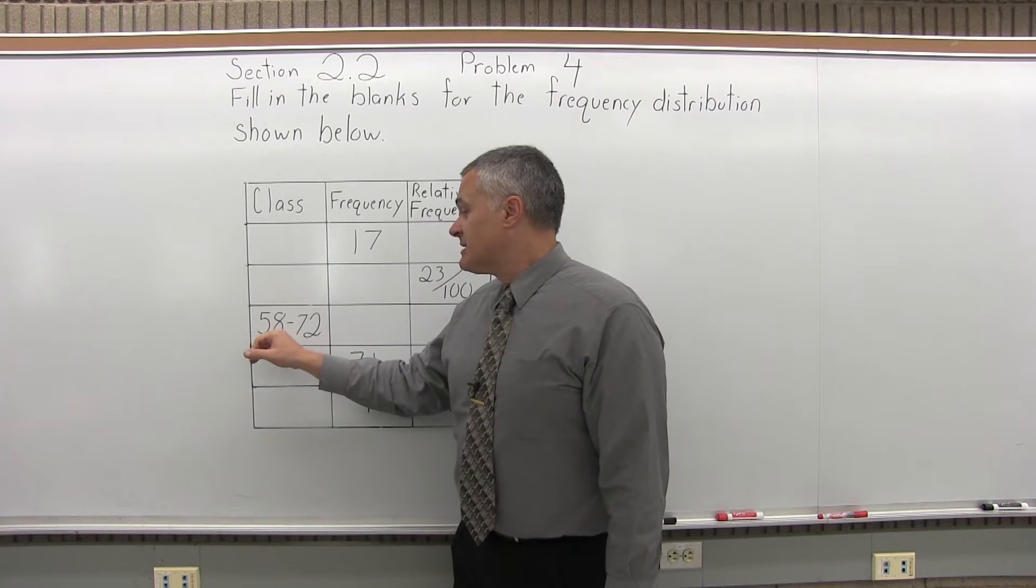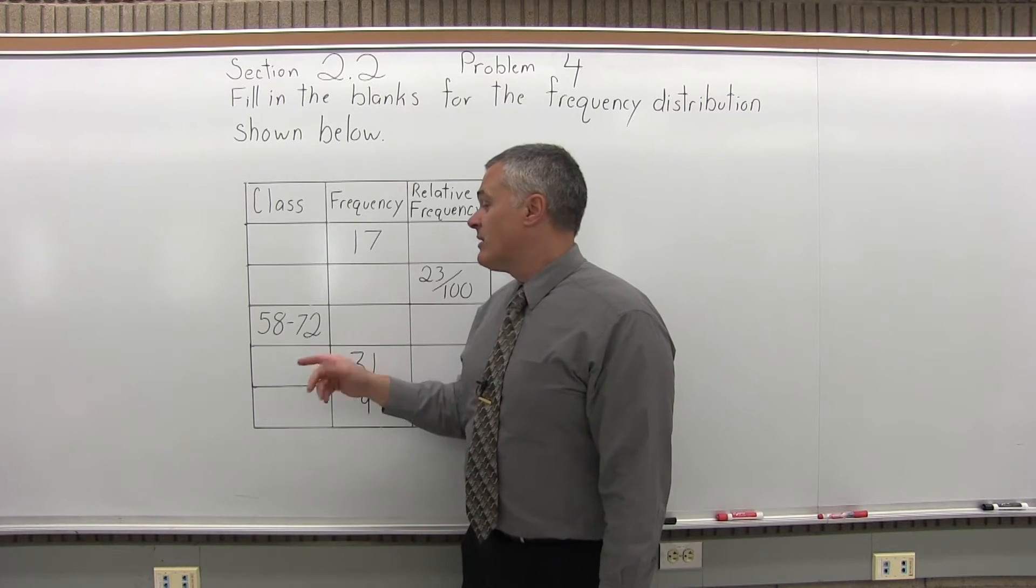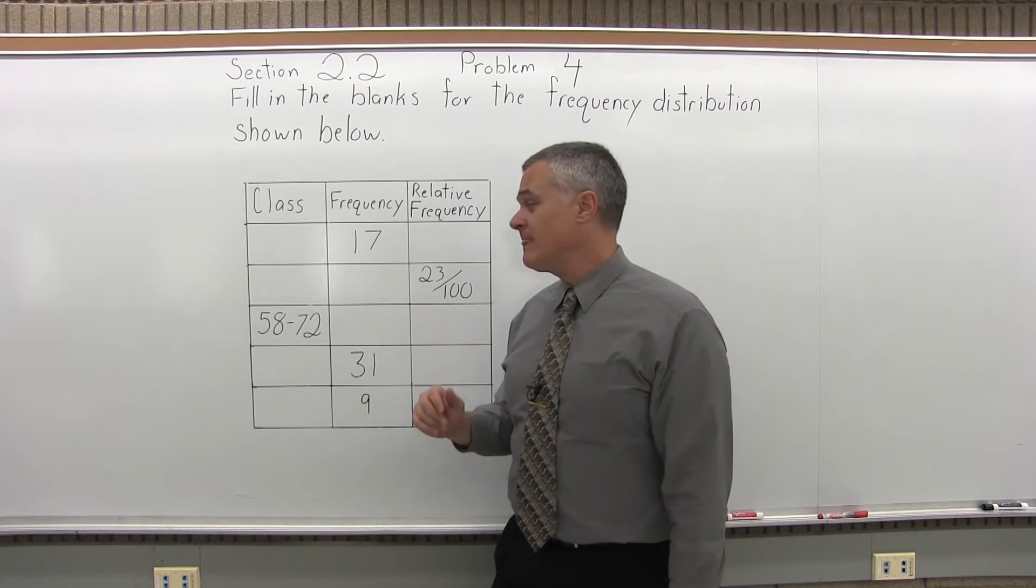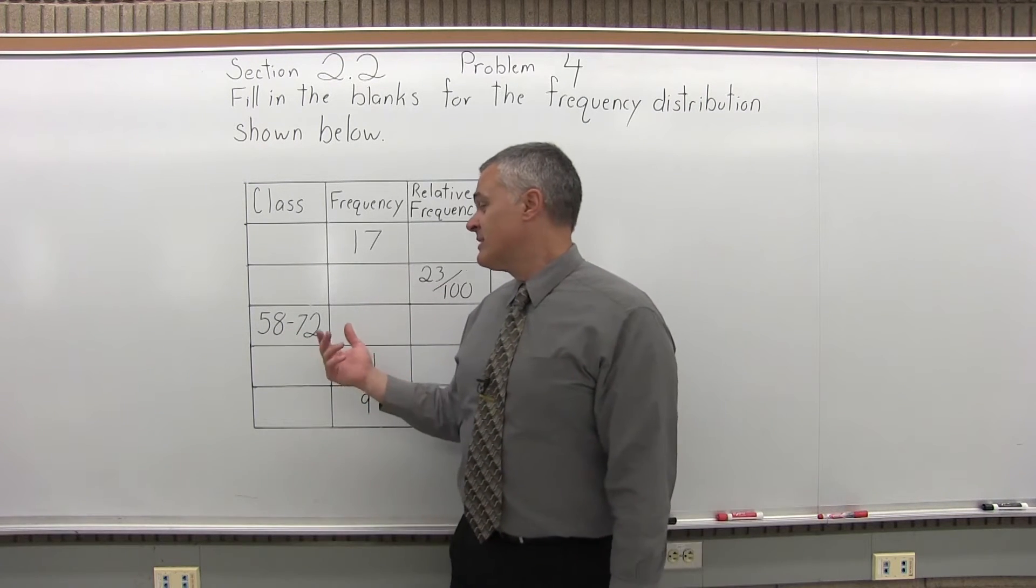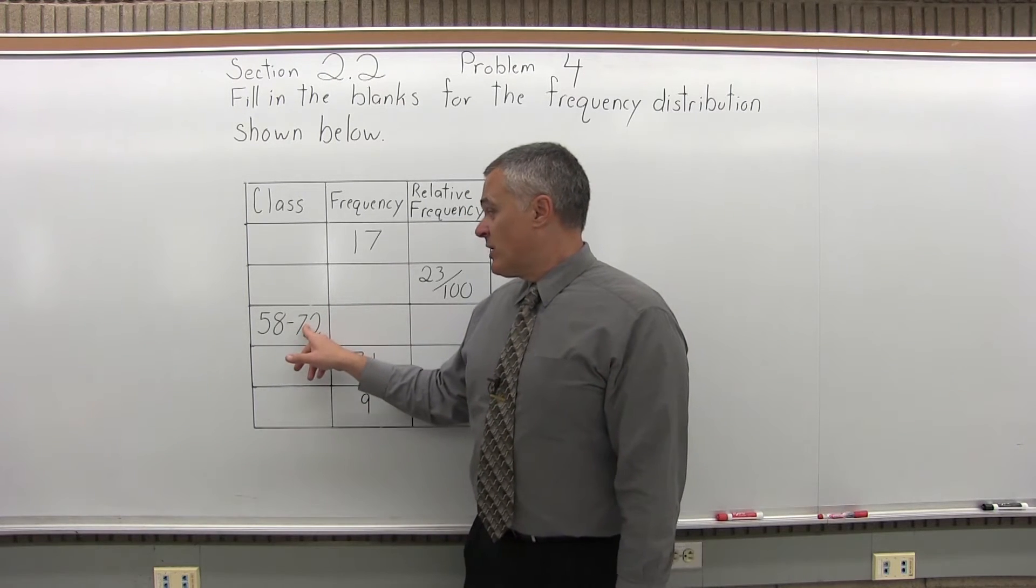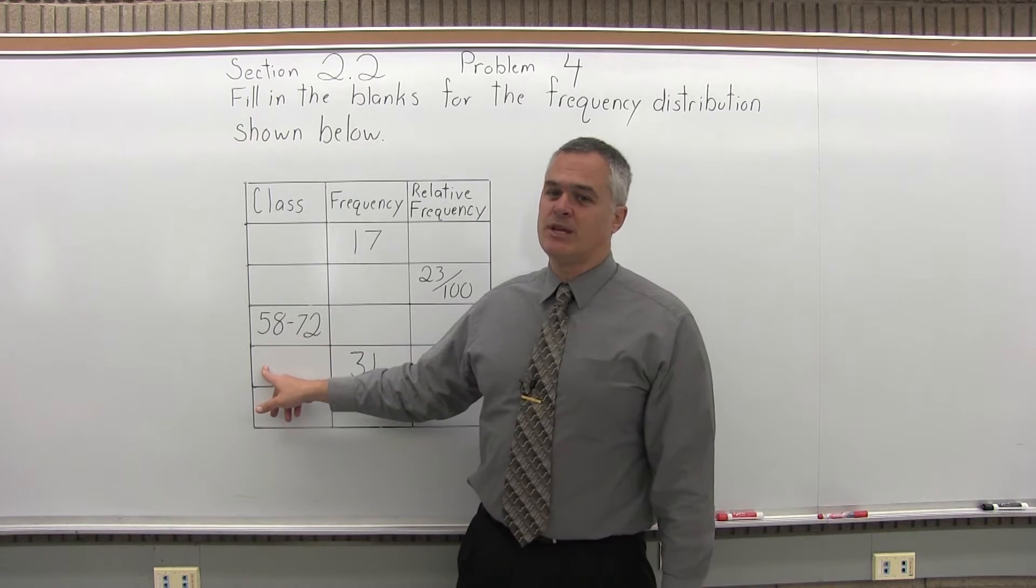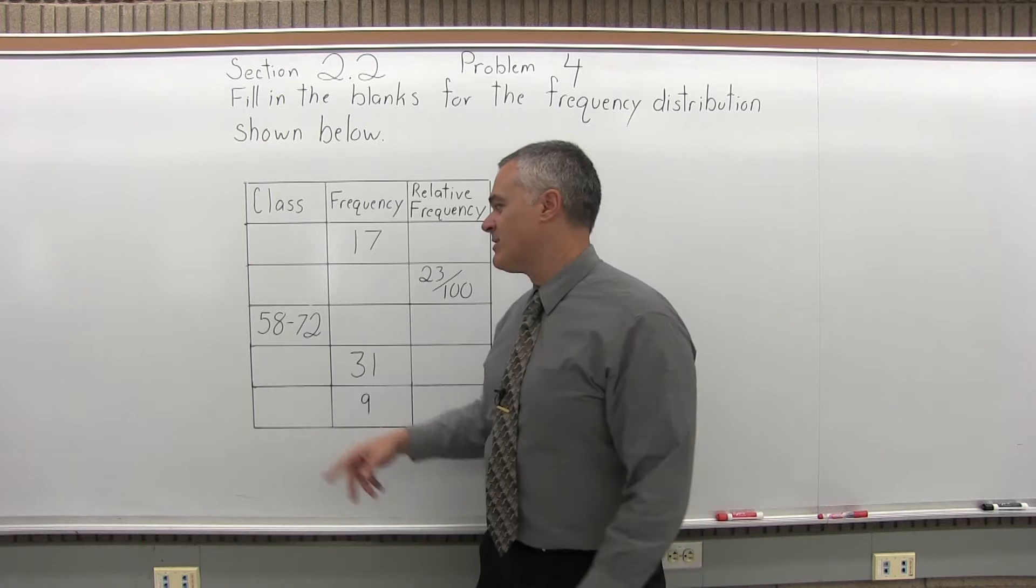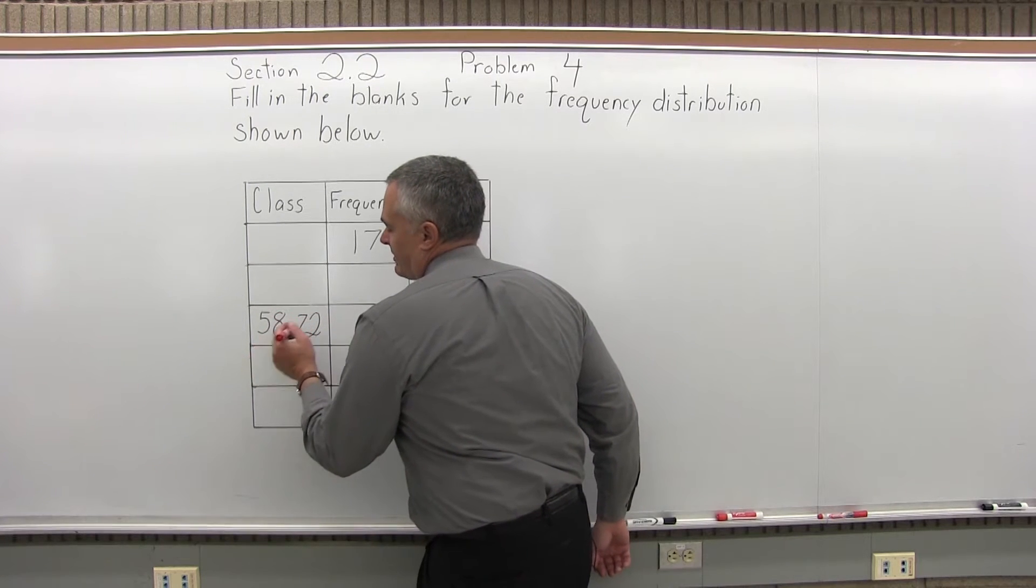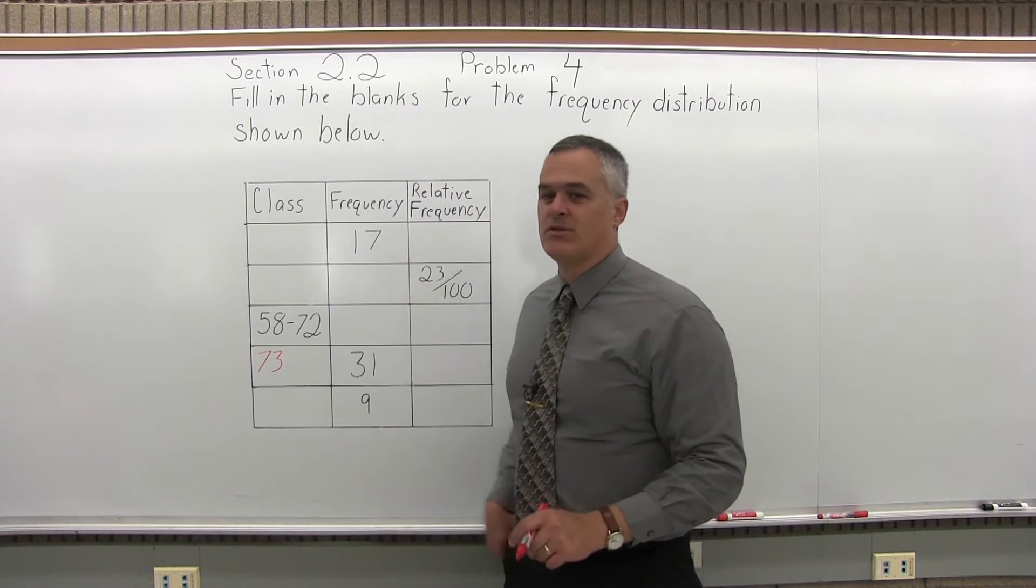I'm only given the class limits, lower limit and upper limit, for one of the classes. There's one class that's given that goes from 58 to 72. Now the one rule I know about those classes is that there's no gap and no overlap for the classes. So if one class ends at 72, the next one has to begin at 73. You can't have a gap. You can't have an overlap. So the fact that one ends at 72 is telling me the next one must begin at 73.